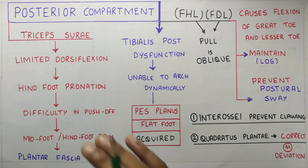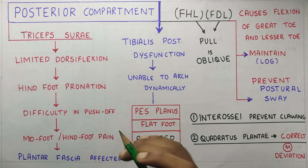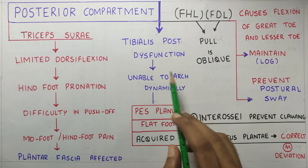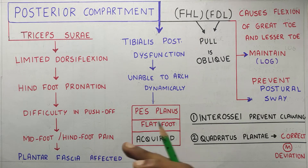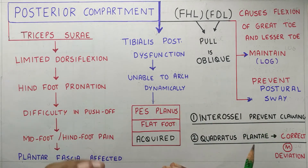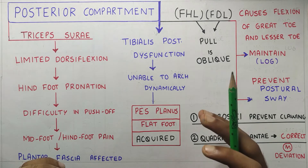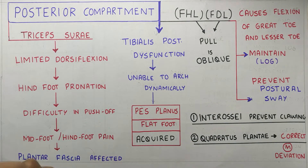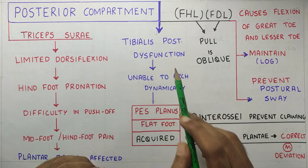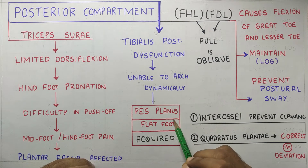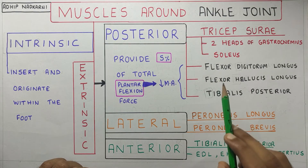Tibialis posterior dysfunction — when it cannot maintain the arch or create supination during push-off — gives rise to pes planus or flat foot. We are born with flat feet, and as we adapt to different surfaces the arch is acquired. Tibialis posterior and the intrinsic muscles get trained on different surfaces to develop these arches. Tibialis posterior dysfunction, from insufficient exposure to varied surfaces, can lead to acquired pes planus.